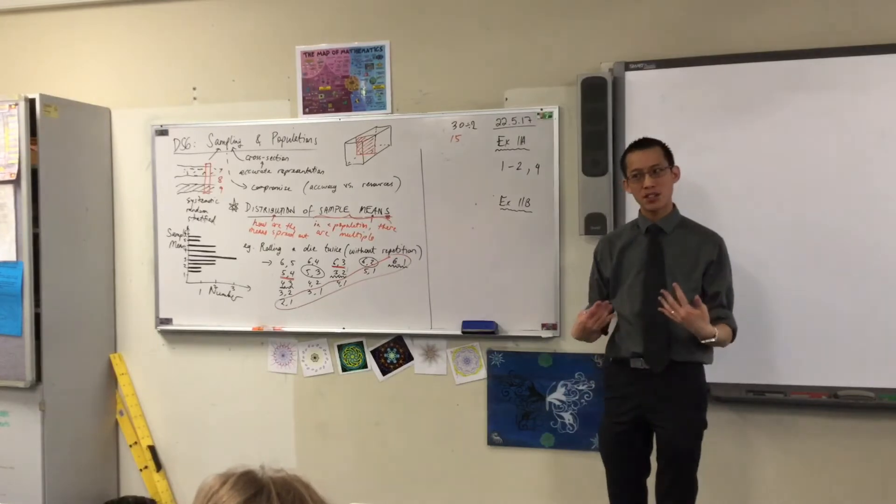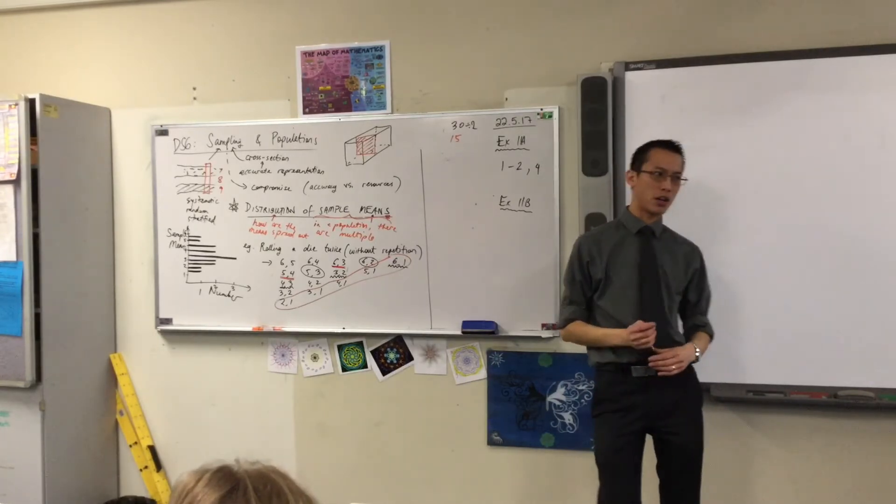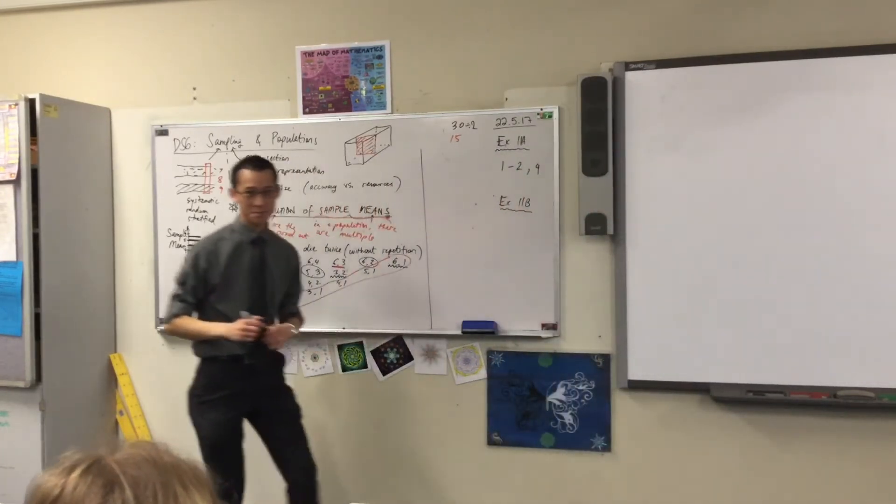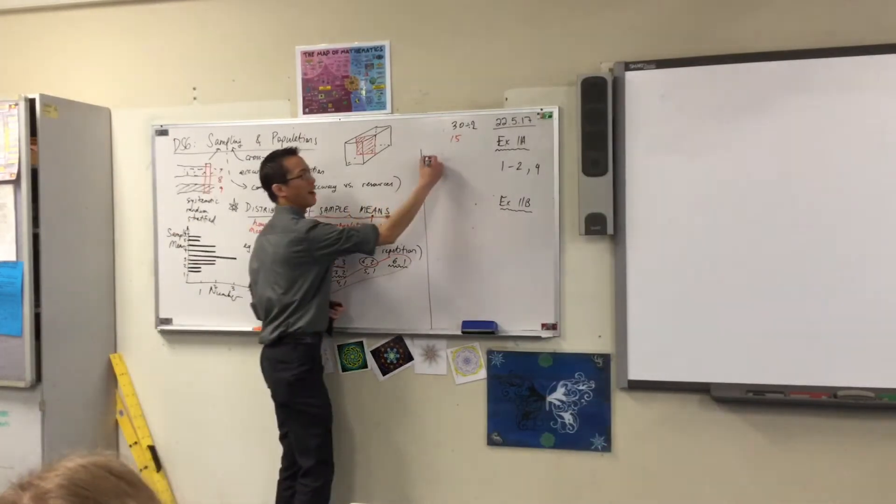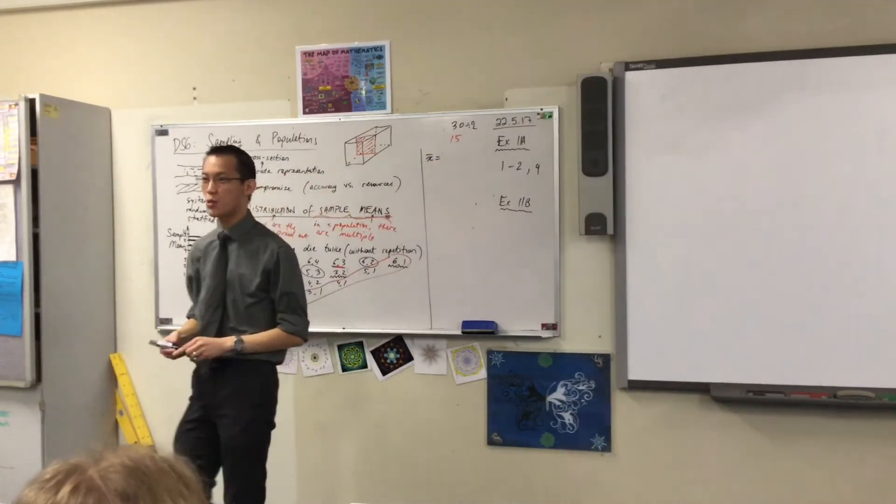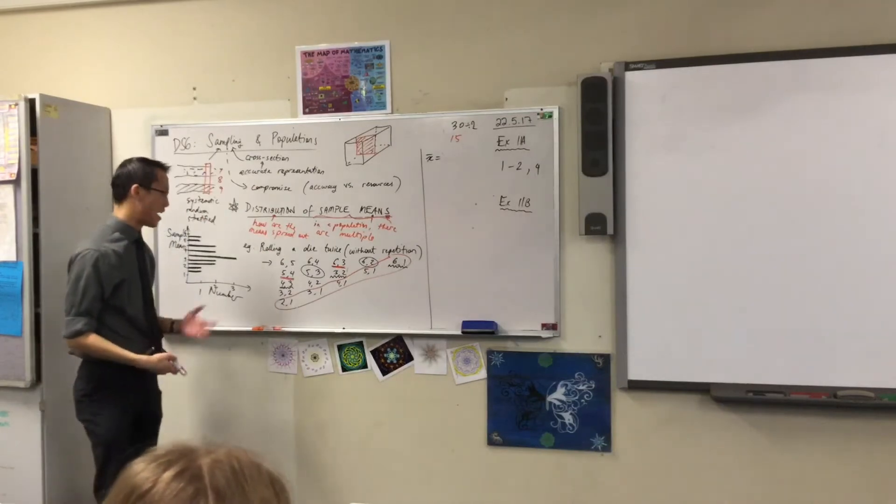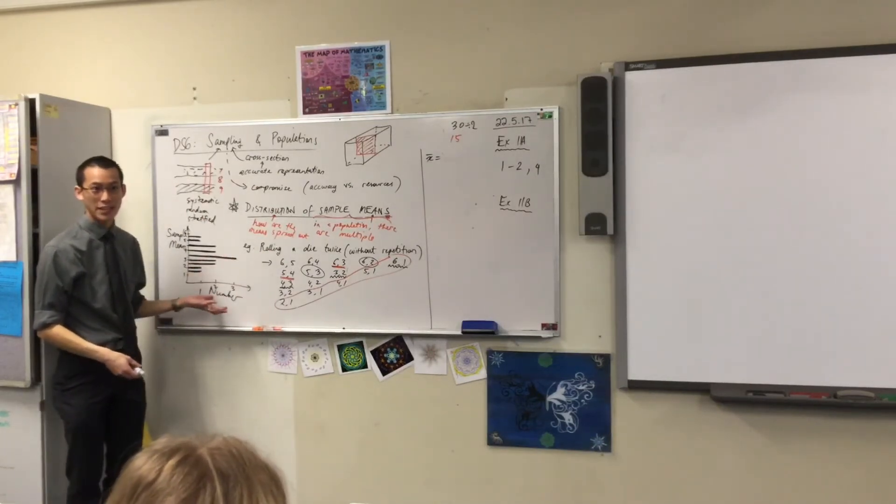If you have 15 scores of any kind, how do you work out their mean? You just add them all together. Yeah, very good. If you have 15 scores, you add up the 15 scores and then you divide by 15.